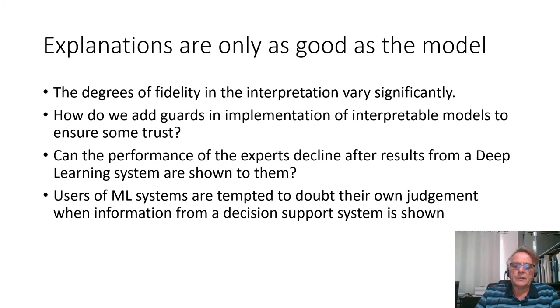Explanations are only as good as the model. It's kind of a common assumption. It would be strange if the model explanation can exceed what the model itself allows. The degree of fidelity of interpretation varies significantly for different tasks. And how do we add guards in implementation of interpretable models to ensure some trust? Can the performance of the expert decline after result from deep learning system are shown to them? Unfortunately, it can happen. Users of machine learning systems are tempted to doubt their own judgment when information from decision support system is shown. So let's actually add extra layer of complexity for the explanation. The fact that human accept explanation, it does not fully means that it is reasonable.